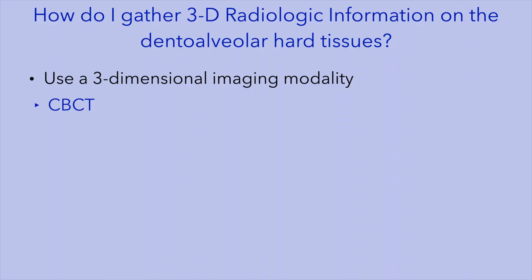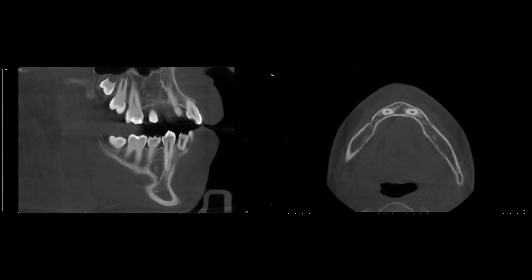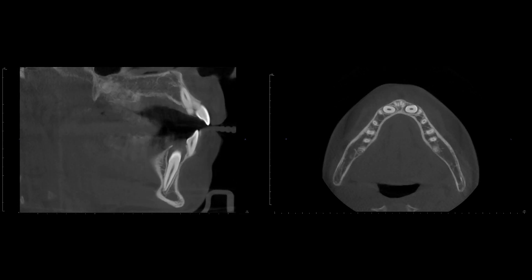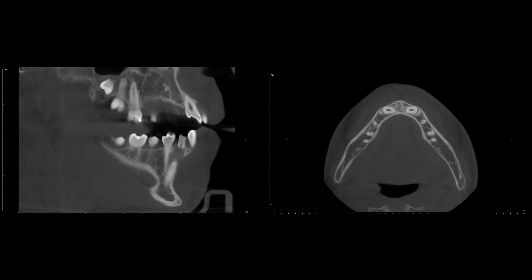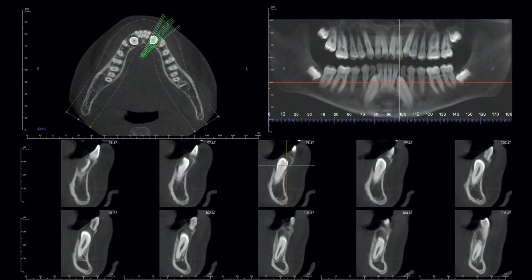The first approach is to use an imaging modality that provides three-dimensional information, and the imaging modality of choice in this case would be a CBCT or a cone-beam CT exam. A CT scan will not only localize the tooth in the buccolingual dimension, but also provide essential information on the boundary conditions — the thickness and anatomic curvature of the buccal and lingual cortical plates — and will provide this information without any dimensional distortion.